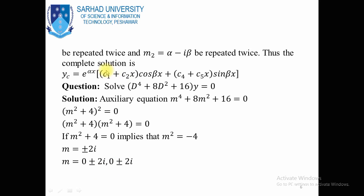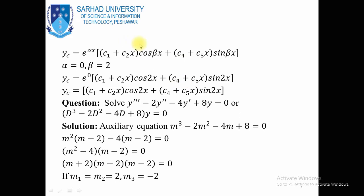So the complementary solution will be in the form: e^(alpha·x)[(c1 + c2·x)cos(beta·x) + (c4 + c5·x)sin(beta·x)]. Putting alpha = 0 and beta = 2, we obtain e^0·[(c1 + c2·x)cos(2x) + (c4 + c5·x)sin(2x)]. Since e^0 = 1, the complementary solution is (c1 + c2·x)cos(2x) + (c4 + c5·x)sin(2x).